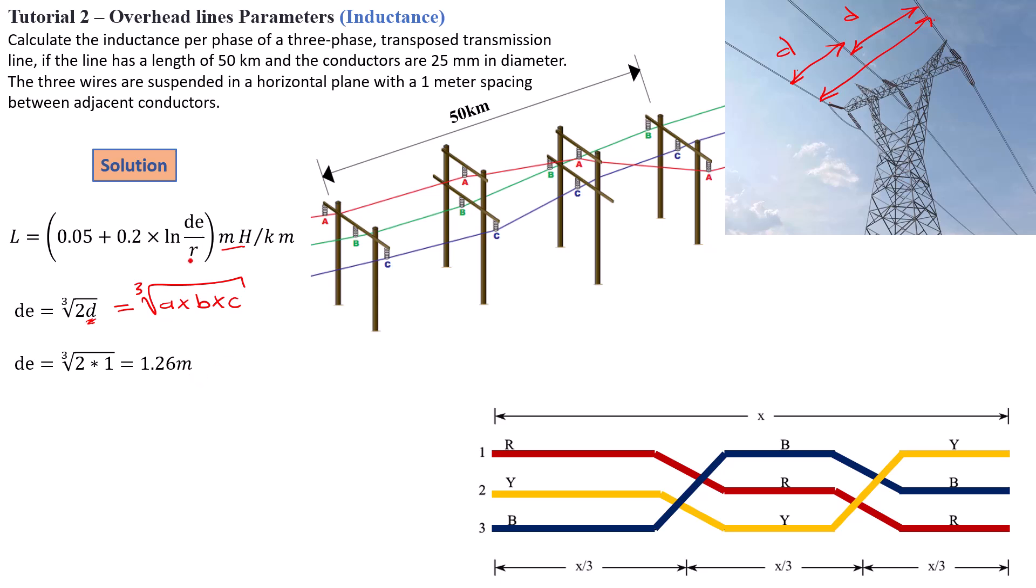Now the next parameter here in our formula is the radius. This is related to the diameter of the cable or conductor. So we can just go ahead and calculate our radius, which is the diameter divided by 2. Then we've got 25 millimeters divided by 2, and we find the radius of 0.0125 meters. So we have to convert the millimeter to meter for the SI unit, just as we have dE here in meter.